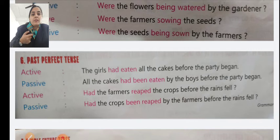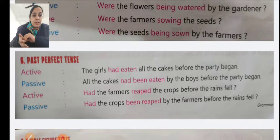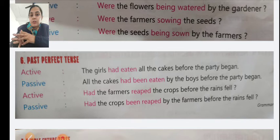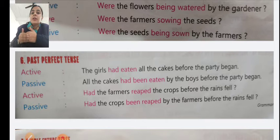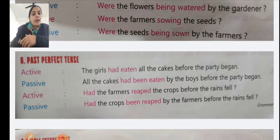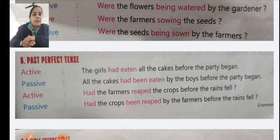Past perfect tense: something that happened in the past. You need to know whether active voice or passive voice is given. Similarly, vice versa — if passive voice is given, you can change it to active voice as well. Let's read the example.